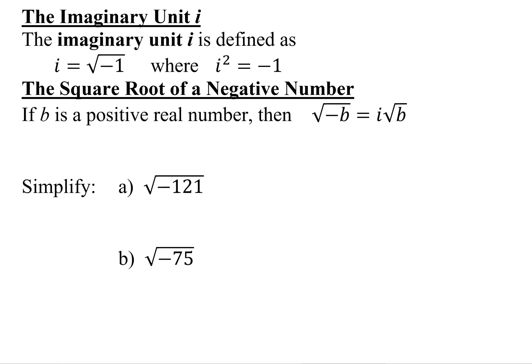In this problem, we're asked to simplify several expressions that contain the square root of a negative number. So let's review a couple of things before we do this. The first is the definition of the imaginary unit i, which is defined to be the square root of negative 1, where i squared equals negative 1. And using that definition, it allows us to find the square root of a negative number. So as long as b is a positive real number, then the square root of negative b is i times the square root of b.